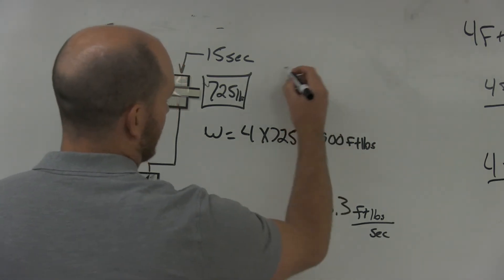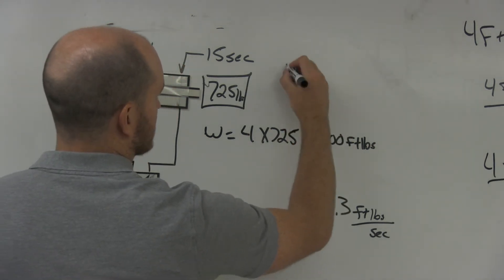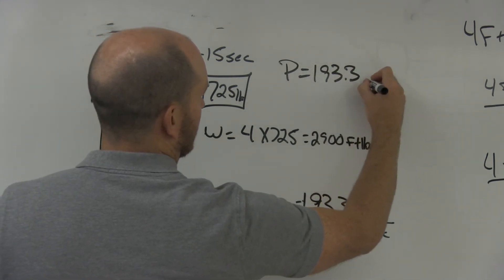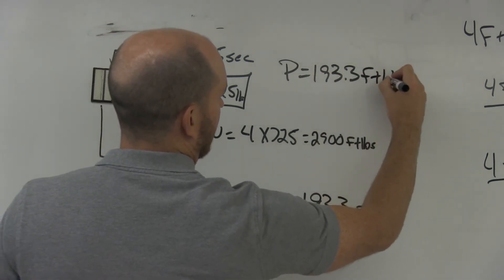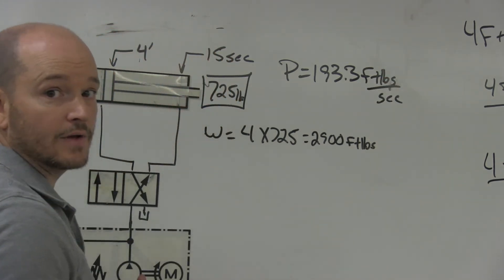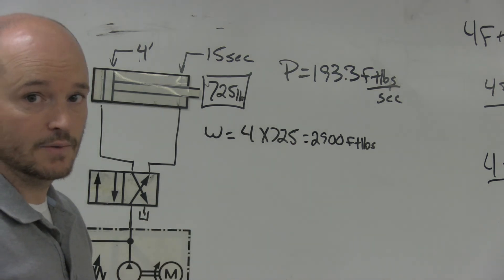So power equals 193.3 foot-pounds per second, and now I want to calculate this out to horsepower.